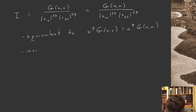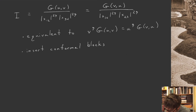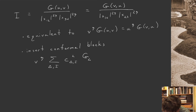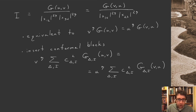Now let's insert the conformal block expansion, decomposing into a sum over conformal primaries and their descendants. We find: v^eta times a sum over all exchanged primaries of c_{delta_i}² g_{delta_i}(u, v) must equal u^eta times the same sum c_{delta_i}² g_{delta_i}(v, u). Here c_{delta_i} are the three-point function coefficients — equivalently the OPE coefficients — and g_{delta_i} is the conformal block for each exchanged primary.